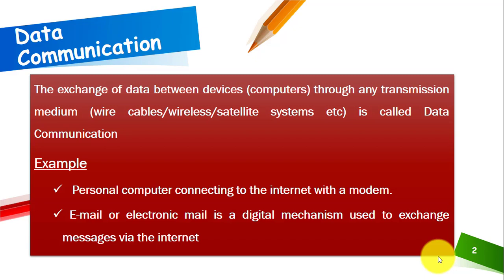So what actually is data communication? Data communication is basically the exchange of data between different devices, and how we can exchange data through any transmission medium — like wired transmission mediums, wireless transmission mediums, or satellite systems. In simple words, the exchange of data between different computers or devices through any transmission medium is called data communication.